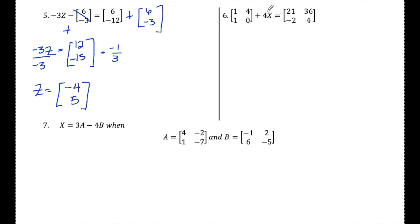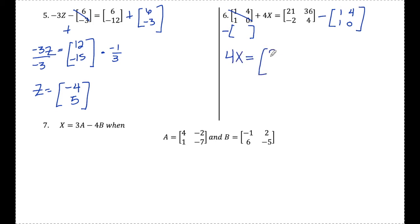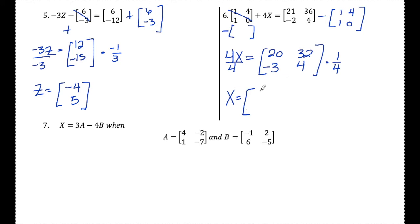Number 6: same idea — I isolate X by following the same steps I'd normally use. First I subtract this matrix over to the other side, getting minus 1, 4, 1, 0. So I have 4X equals: 21 minus 1 is 20, 36 minus 4 is 32, negative 2 minus 1 is negative 3, and 4 minus 0 is 4. Last I divide by 4 (multiply by one fourth): 20 divided by 4 is 5, 32 divided by 4 is 8, negative 3/4 stays a fraction, and 4 divided by 4 is 1.